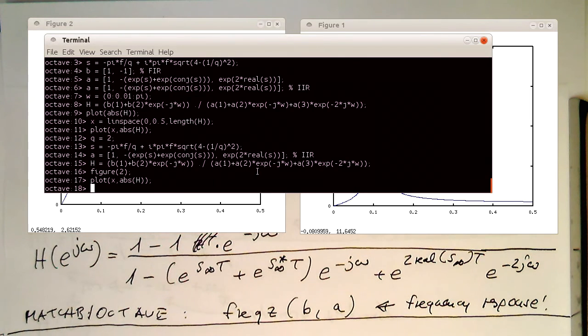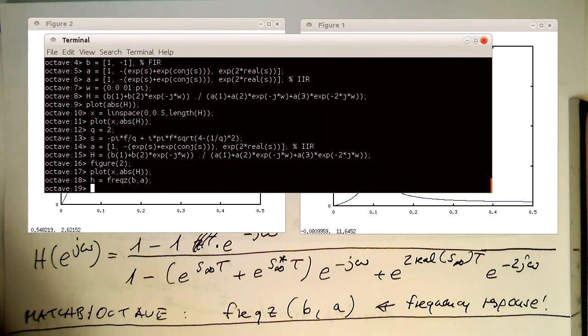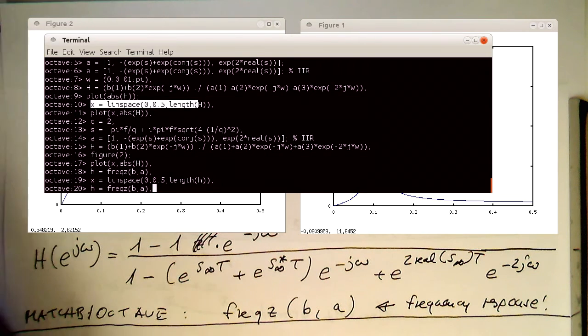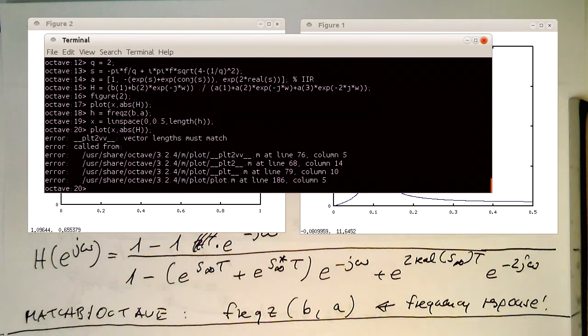So that's very convenient. So if we just write something like H and then freqz of B comma A. So I just write this here as a small h, that we see that there's a difference here. And so now obviously we need to recreate our linspace command with the new length. Oops, this was with capital H.